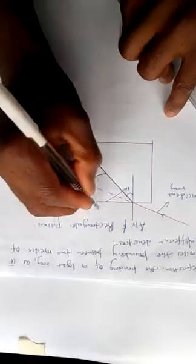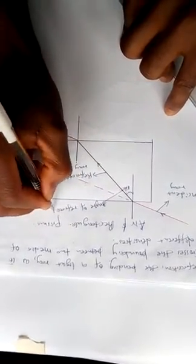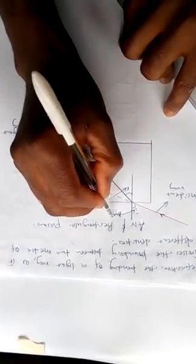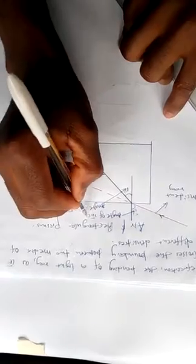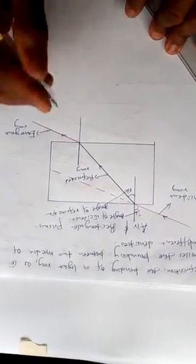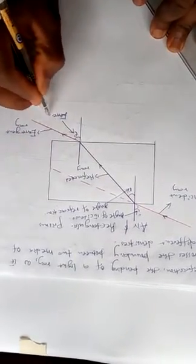There is an angle here called angle of refraction, and there is another angle here called angle of incidence. We have one here called emergent angle.